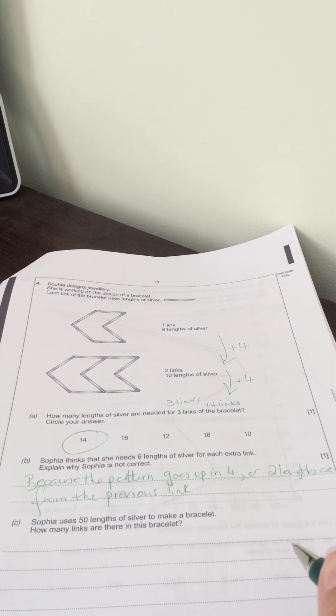Sophia uses 50 lengths of silver to make a bracelet. How many links are there in the bracelet? Well we know the rule is that it goes up in fours.